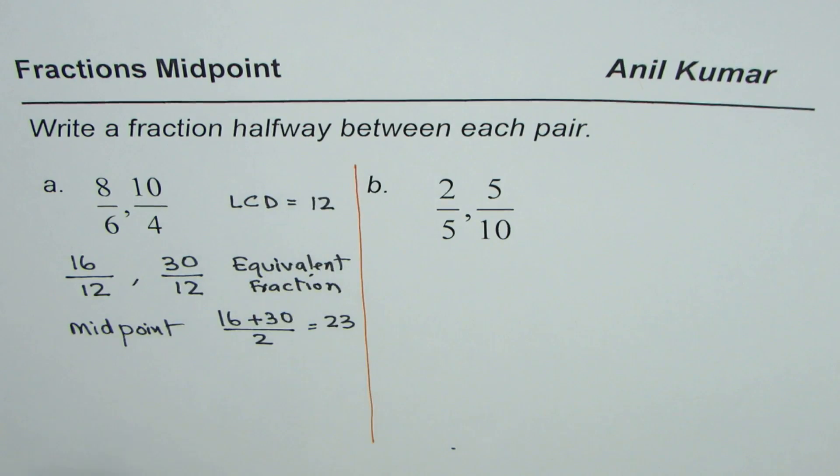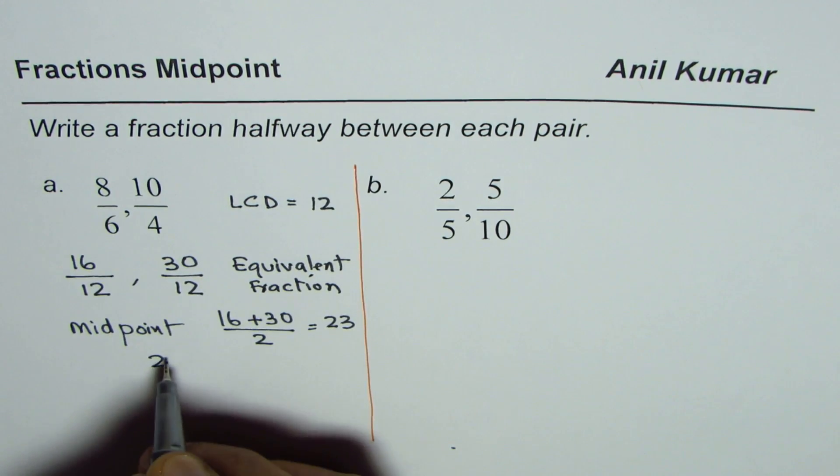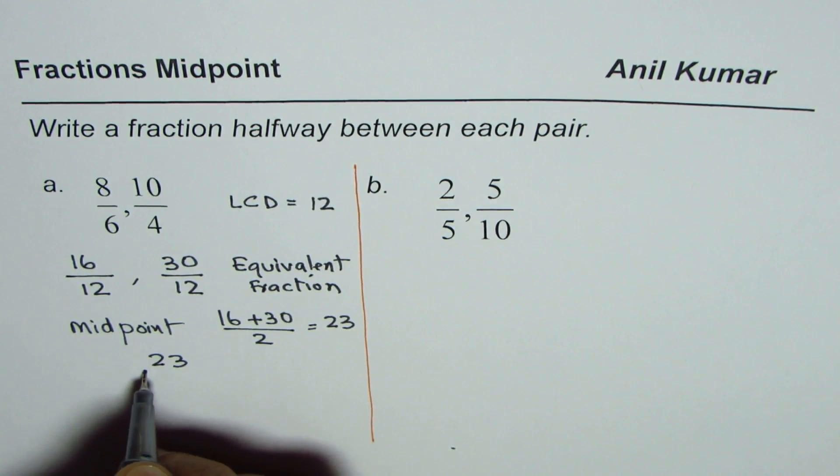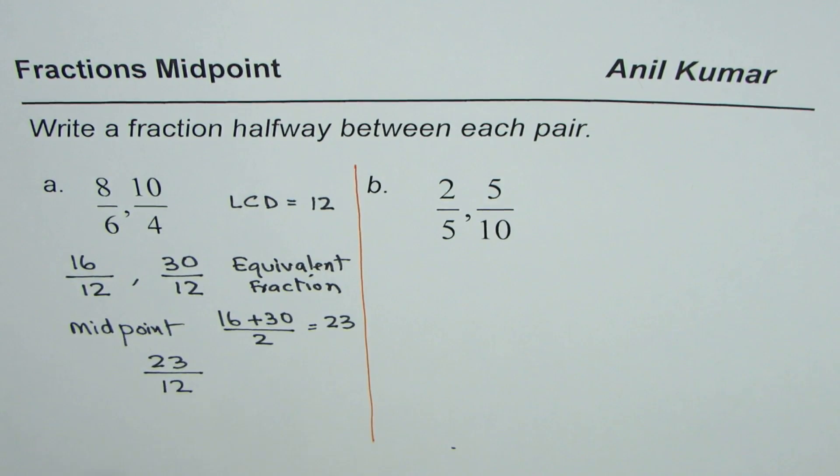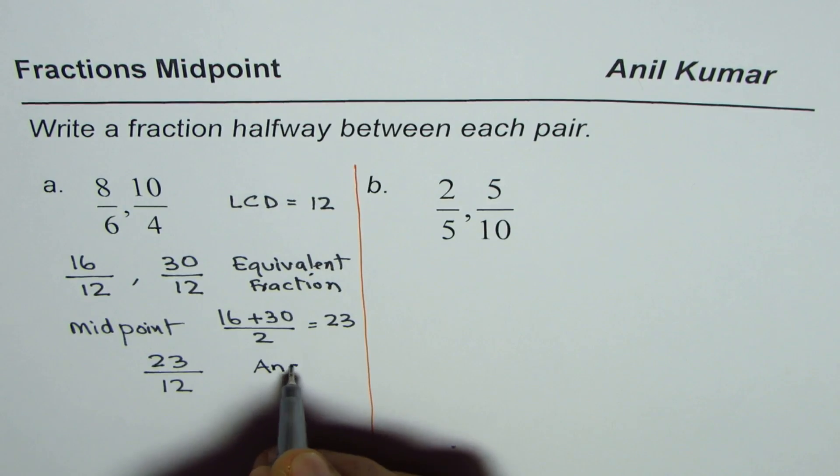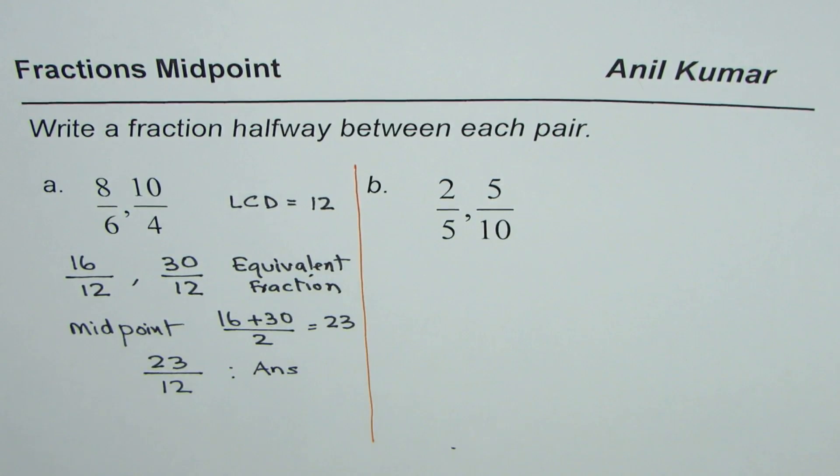So halfway between is the point which has the value 23 divided by 12. So our answer is 23 over 12 is halfway between the given pair. That is the answer for us. Let's do the next one now. I know you have understood the strategy at this time. So why not stop the video, answer and then check with my solution.